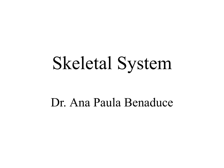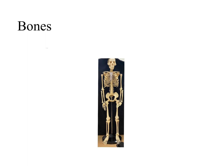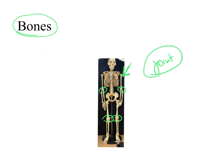Hello everyone, here is Dr. Venaduce, and today we start studying the skeletal system. When we study the skeletal system, we study the skeleton. In a skeleton, we see lots of bones, but we also have places where bones join together, and those places we call joints. If we zoom in on a joint, we find cartilage and ligaments. So when we study the skeletal system, we study bones as well as cartilage and ligaments.